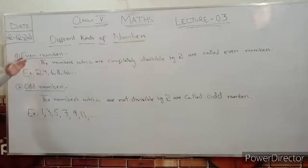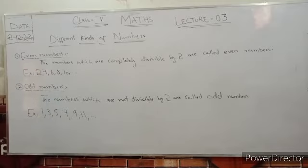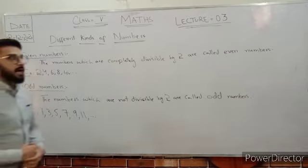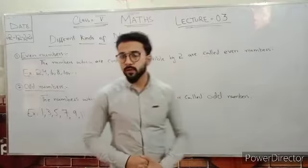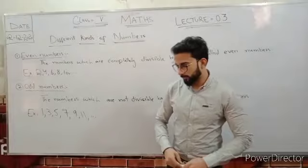We have chosen the first of all, even numbers. Even numbers, the numbers which are completely divisible by 2 are called even numbers. For example, 2, 4, 6, 8, 10, 12 and further so on.